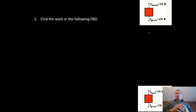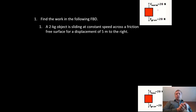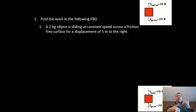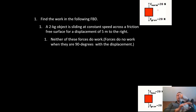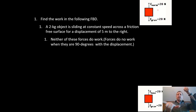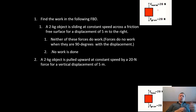Example four: a 2-kilogram object slides at constant speed across a friction-free surface for 5 meters. Normal force is up, gravity is down, but the object is moving left and right. The force and displacement must be in the same direction — force is up/down, displacement is left/right, so there is absolutely no work done in this diagram.